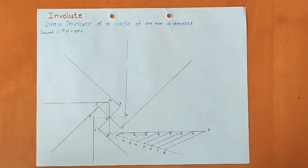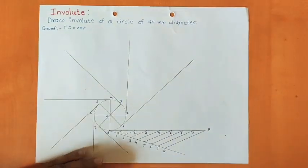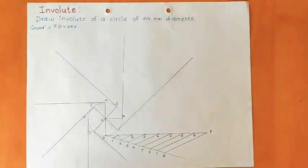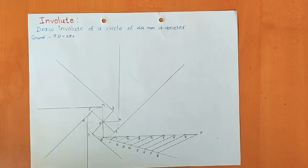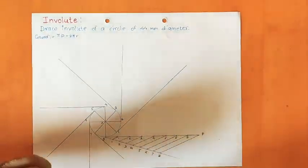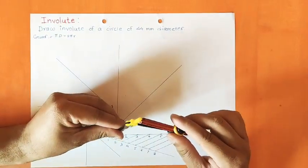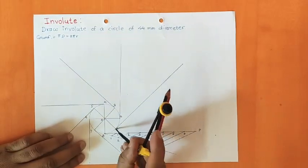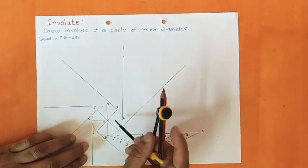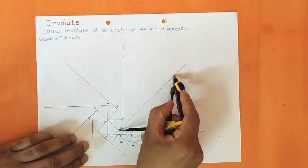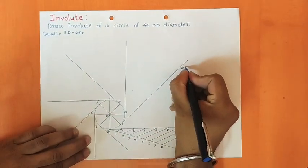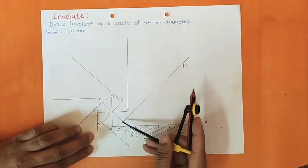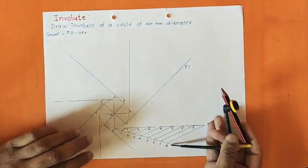I have now drawn normals at all 8 points of the circle. The next step is to transfer distances. Take in the compass the distance equal to 1P. Put your compass on point 1 and cut a point on the tangent to O-1. This gives you point P1. So we took distance 1P, placed the compass on point 1, and obtained point P1.